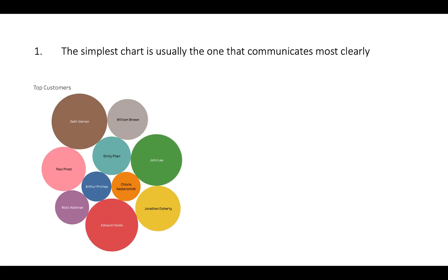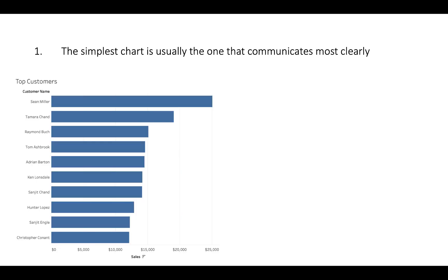A pie chart might be clear enough for some things, but a bubble chart is very difficult to use for comparison — who's number one, Seth or Edward? Who's number two, Edward or John? Figuring out the relative difference between customers is much harder in a bubble chart than in a pie chart or bar chart. Usually we want to wow people with what our data says, not with a fancy-looking chart.